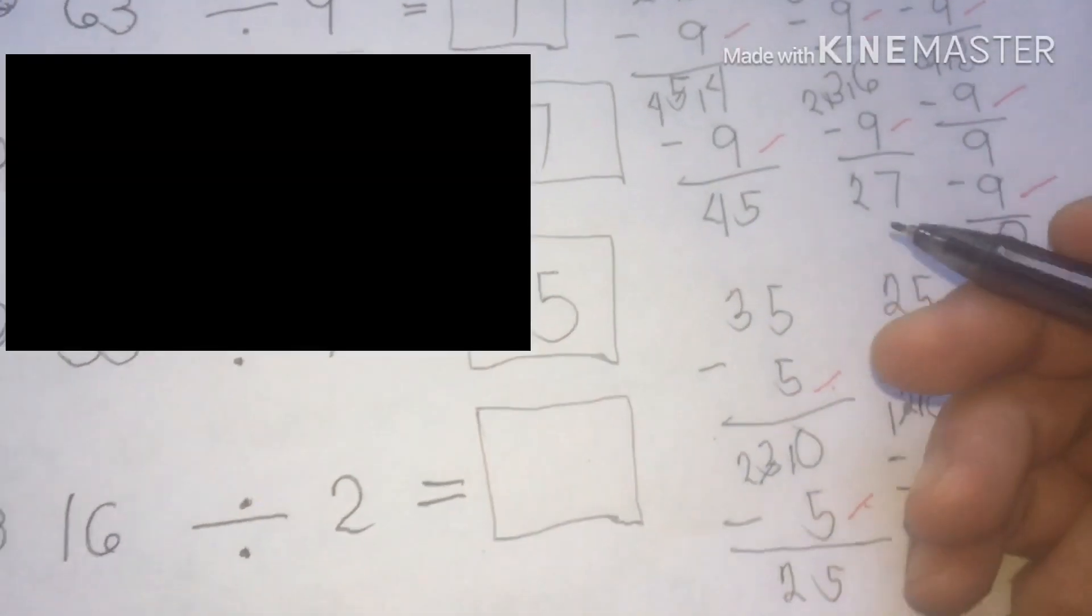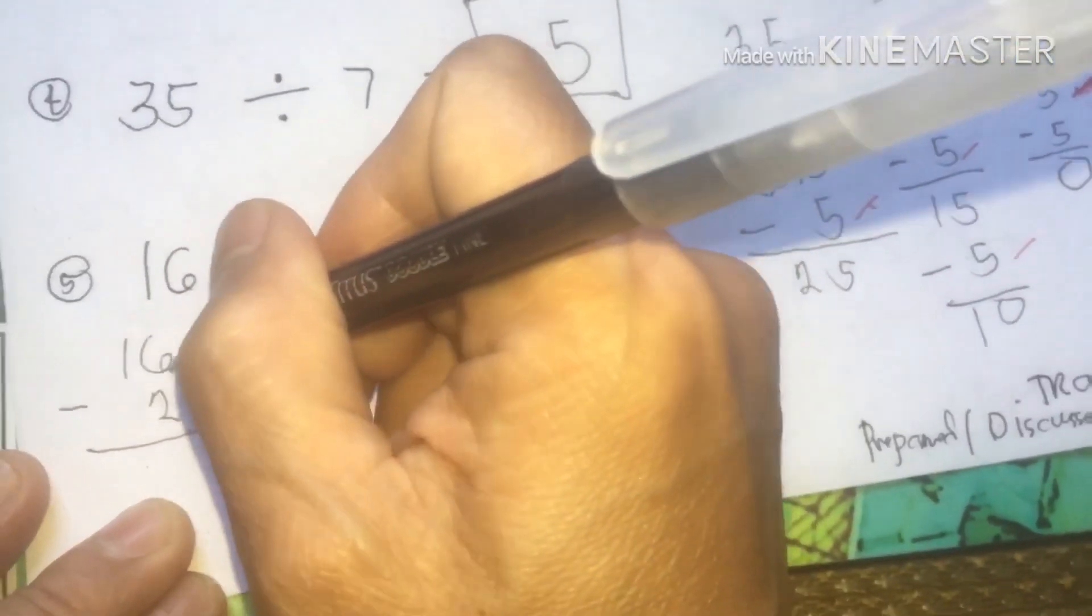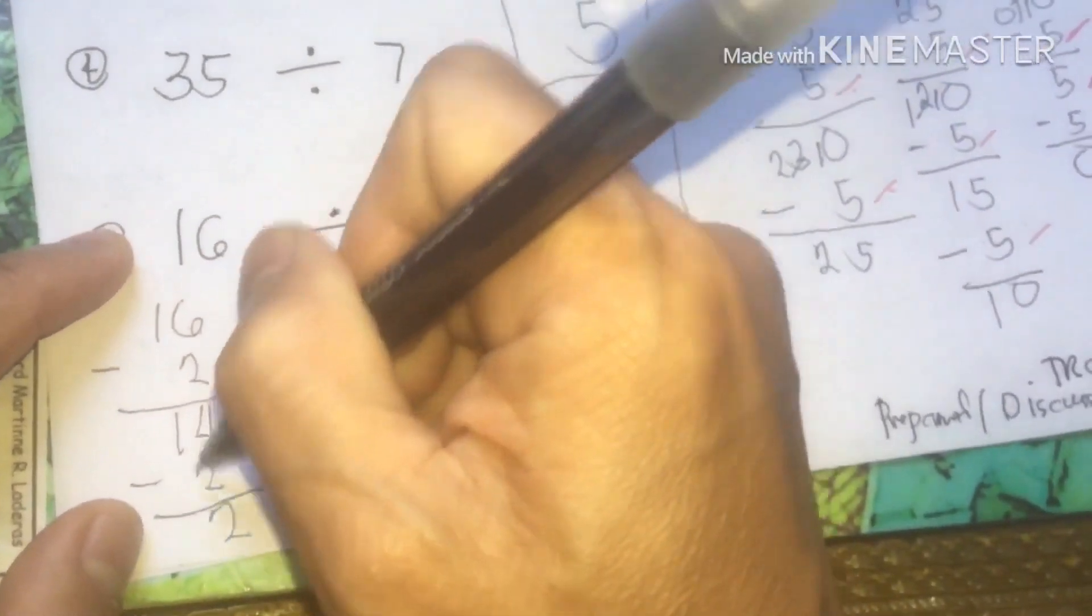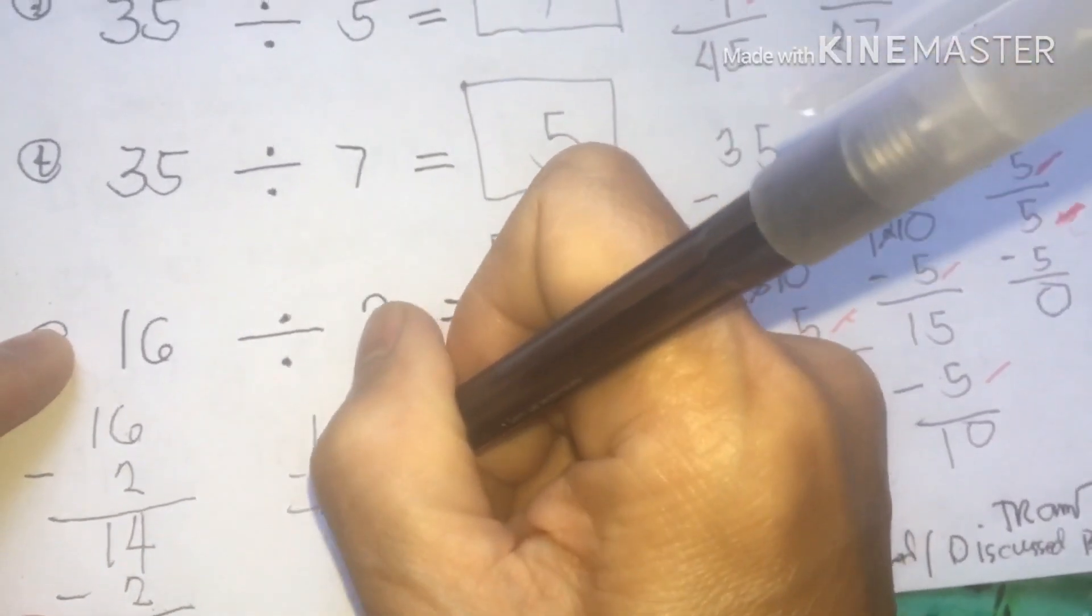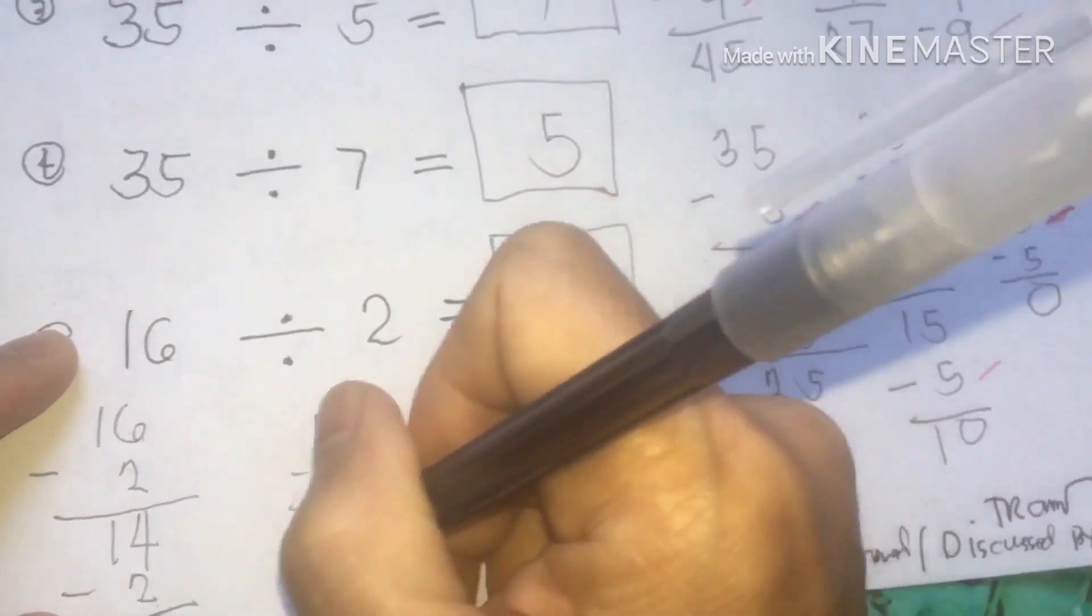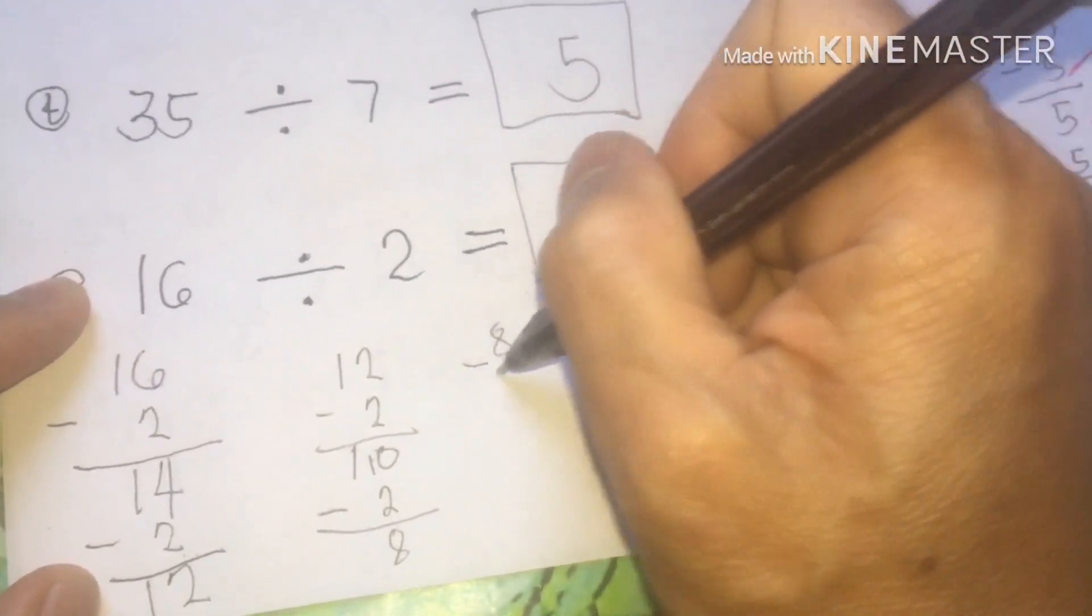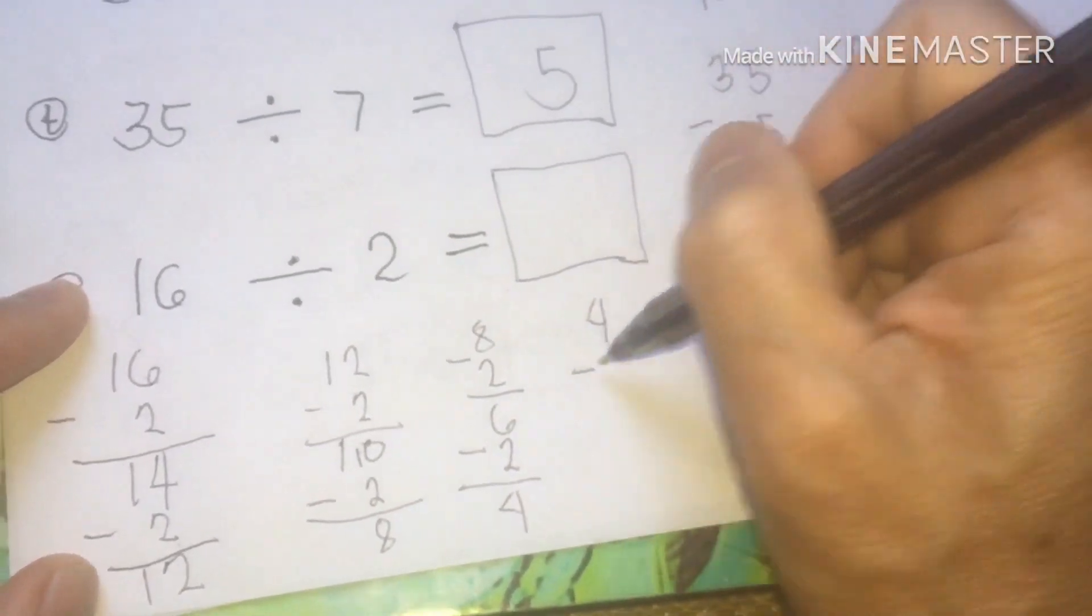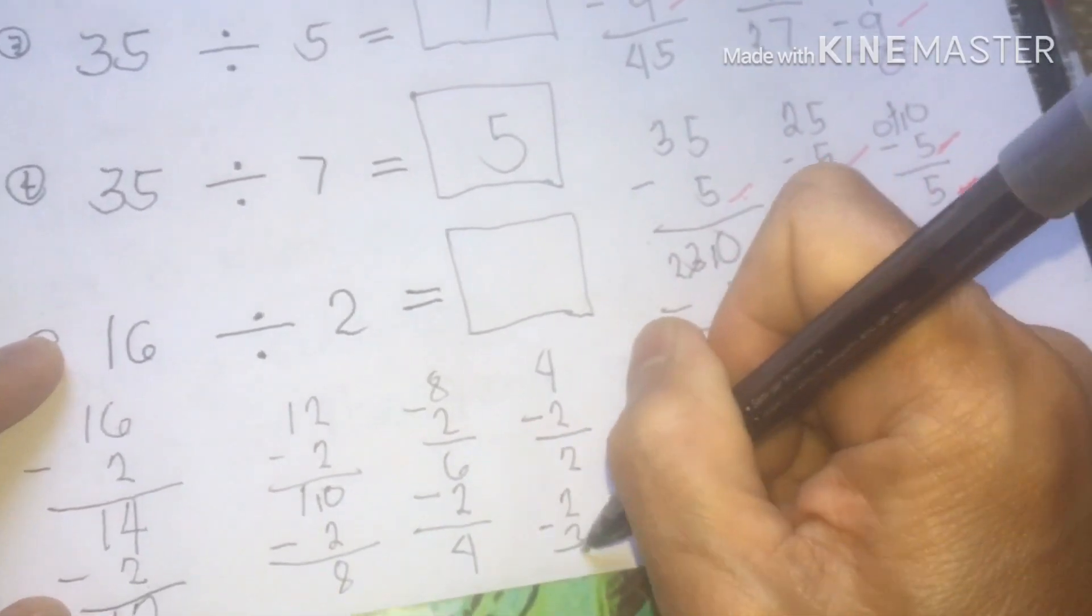Let's skip for number 5. We have 16 divided by 2. 16 minus 2, we have 14. 14 minus 2, we have 12. 12 minus 2, we have 10. 10 minus 2, we have 8. 8 minus 2, we have 6. 6 minus 2, we have 4. 4 minus 2, we have 2. And 2 minus 2, we have 0.